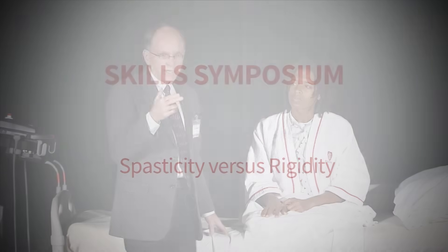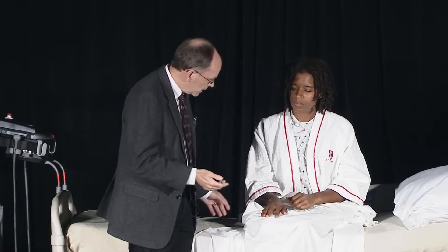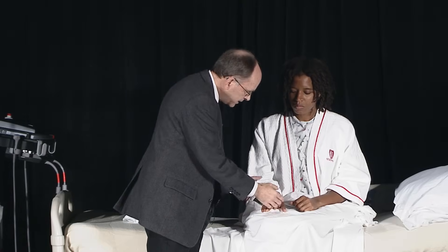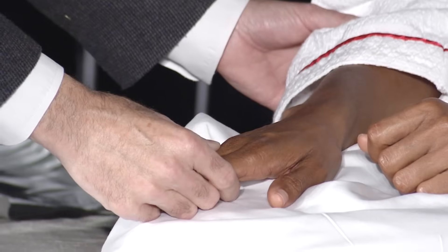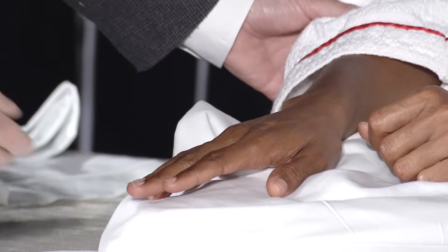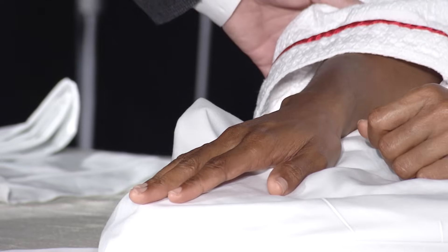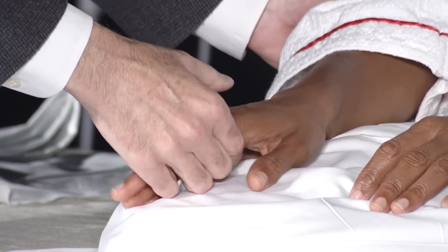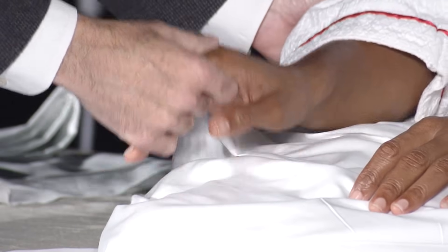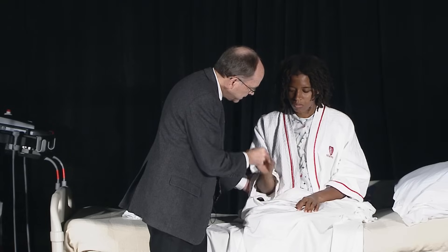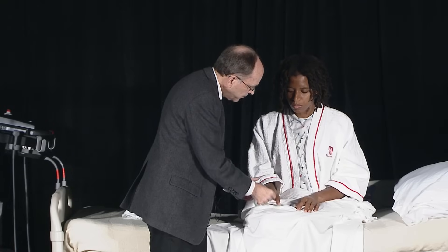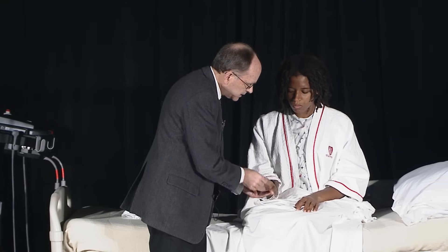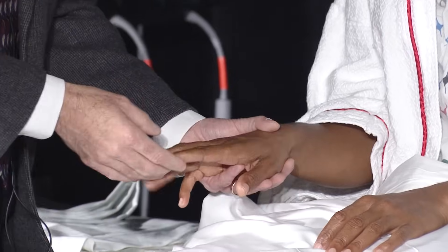We have resting tremor, rigidity, bradykinesia. The rigidity you elicit by asking the patient to keep the limbs floppy, and explain to them that you're just going to flex and extend the elbow. You can test it at the elbow. You can test it at the wrist.